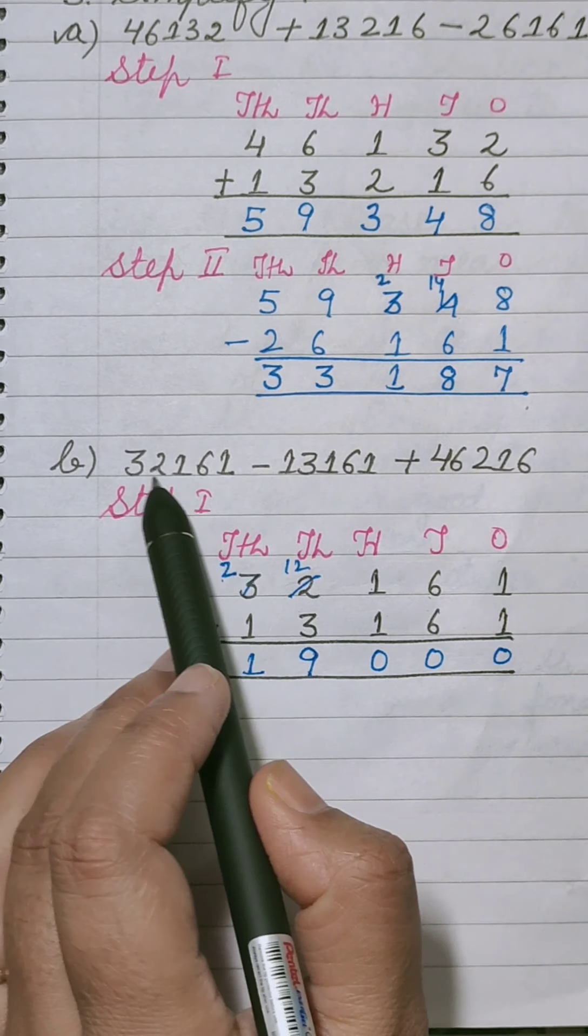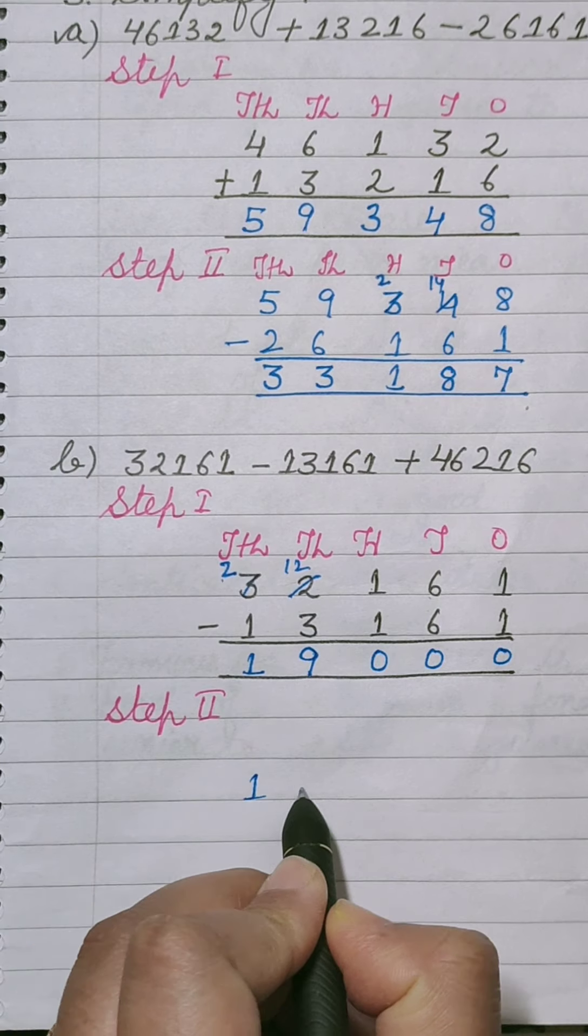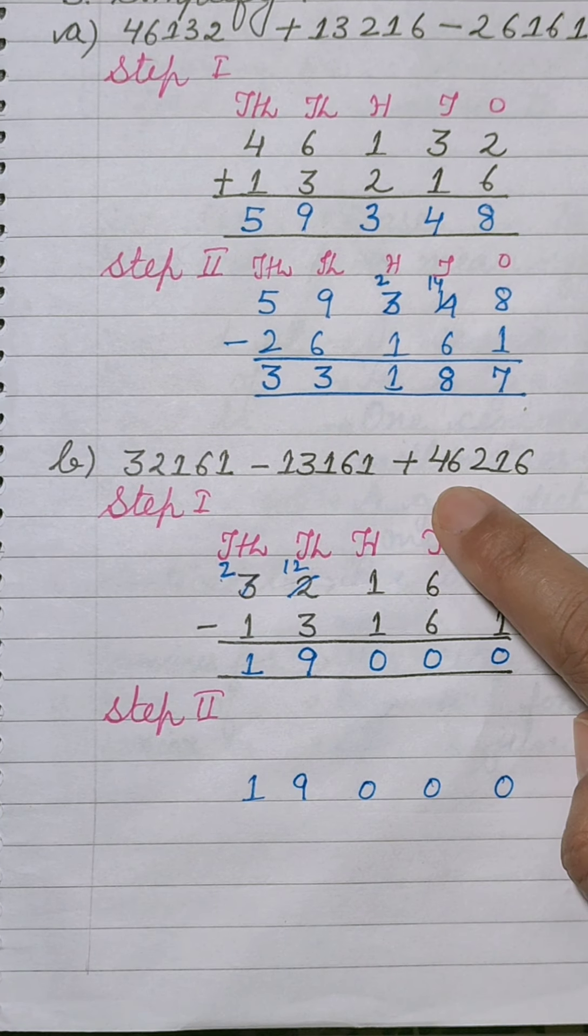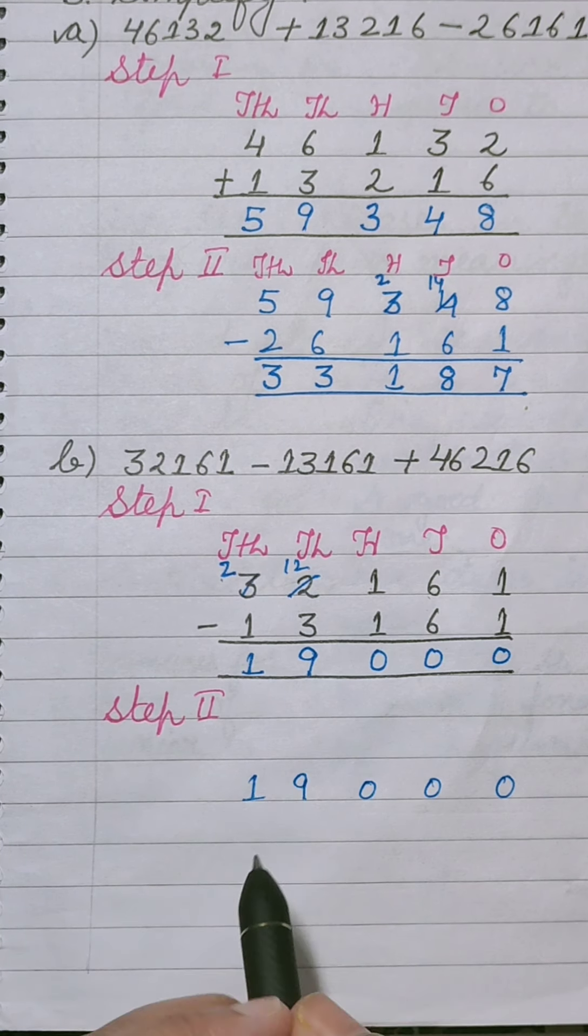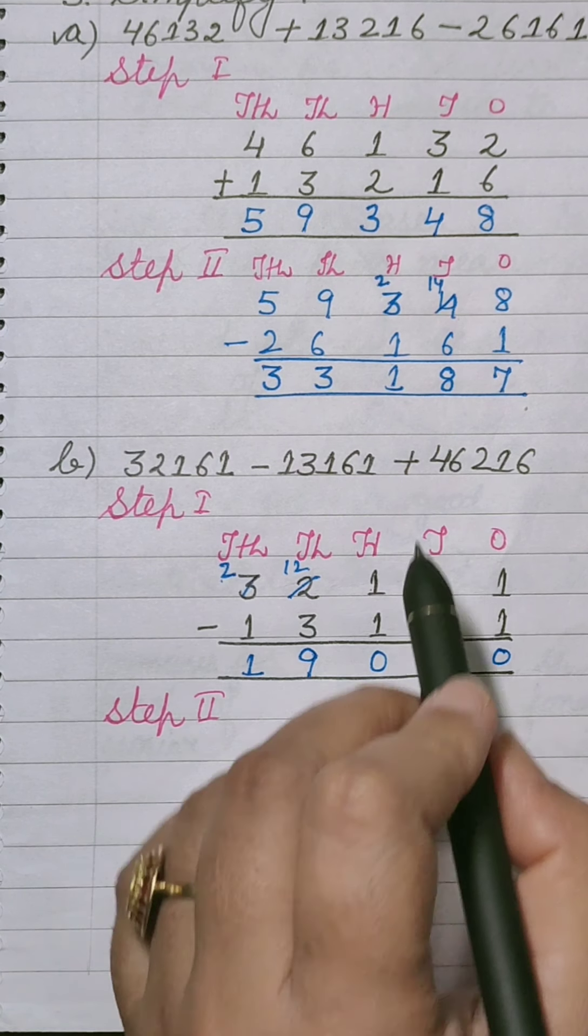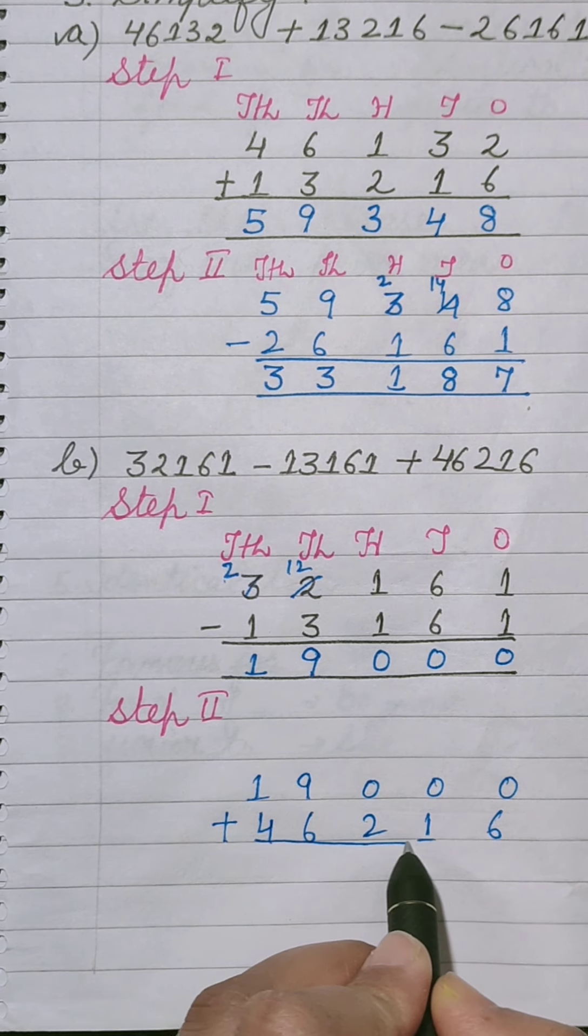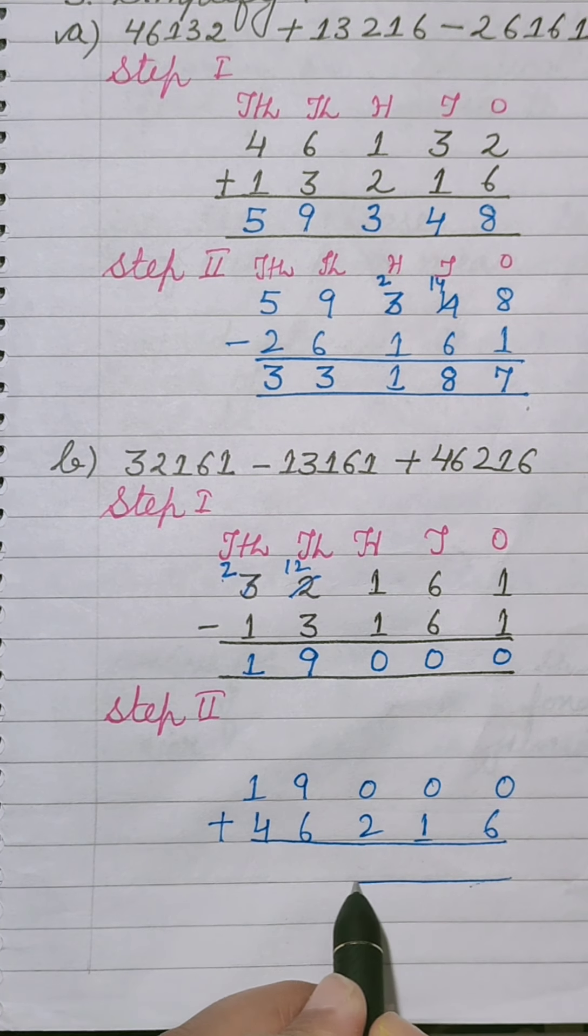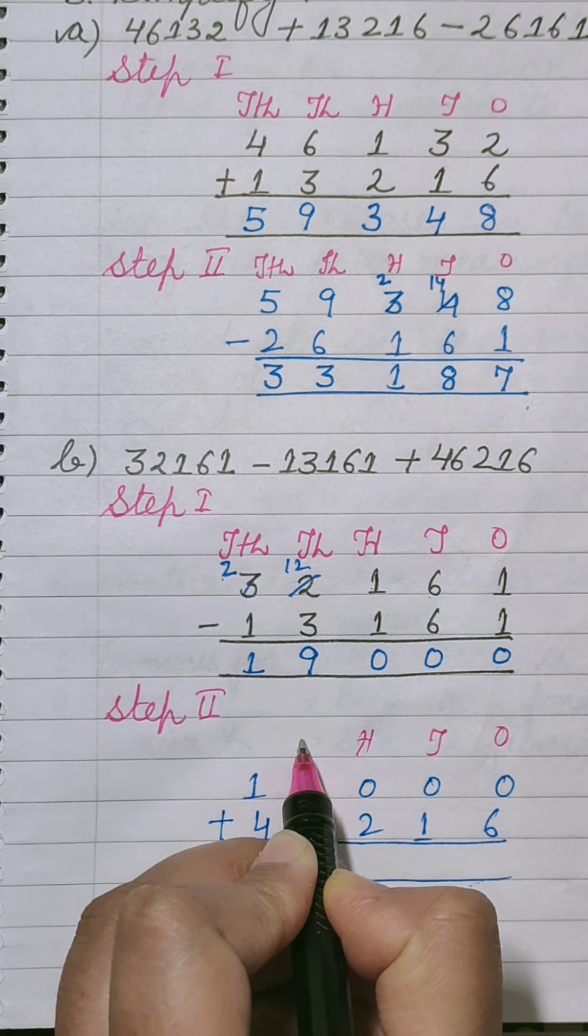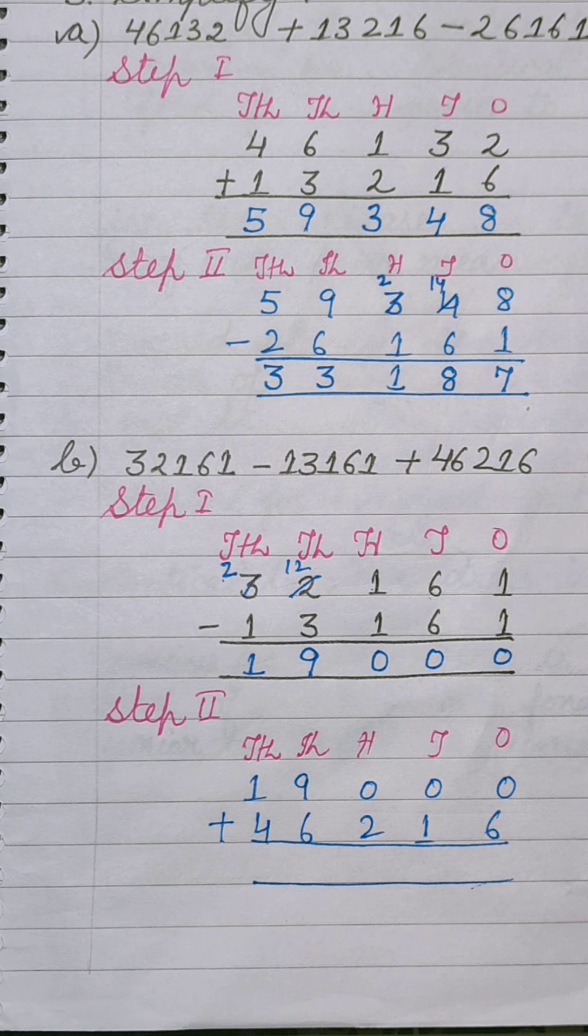Now second step is, इन दो values को solve किया हमने और उसका अंसर है 19,000. I will place 19,000 here. Now 3rd statement, 3rd number is of positive 46,216. यहाँ प्लस का साइन यह भी प्लस का था, तो इन दोनों को हम प्लस करेंगे. By showing its places: 1, 10, 100, 1000, and 10,000.